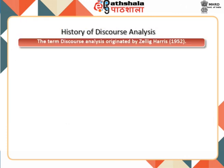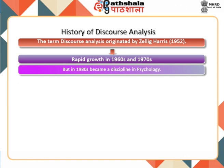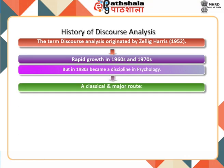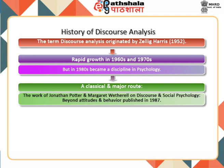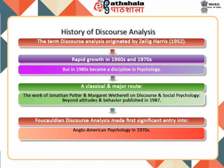The term discourse analysis was originated by Zelig Harris in a paper published in 1952. The study of discourse showed rapid growth in the 1960s and 1970s, but only in the 1980s it became a discipline in psychology. A classical and major root for its introduction in psychology is the work of Jonathan Potter and Margaret Wetherill, On Discourse and Social Psychology: Beyond Attitudes and Behaviour, published in 1987. Another strand originated in the work of French academic Michel Foucault; Foucauldian discourse analysis made its first significant inroads into Anglo-American psychology in the 1970s, and is an alternative to the Potter and Wetherill version within psychology.